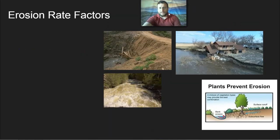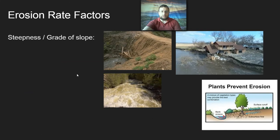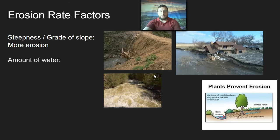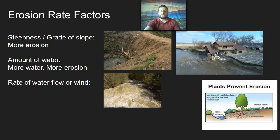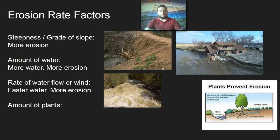There are many factors that affect how fast erosion happens. The steeper the slope, the faster erosion will occur — it's harder to hold that slope together. If there's more water, such as during a flood or rainy season, you'll get more erosion. If water flows faster — like in rapids, flash floods, or wave erosion driven by strong wind — you'll also get more erosion.